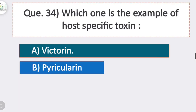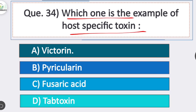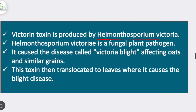Question 34: which one is an example of a host-specific toxin? Option A is correct — victorin. This toxin is produced by Helminthosporium victoriae, a fungal plant pathogen causing Victoria blight affecting oats. The toxin is translocated to leaves where it causes the blight disease.